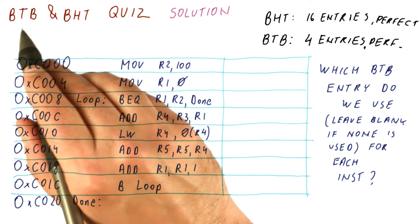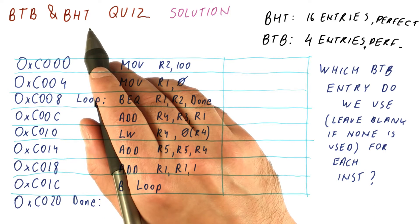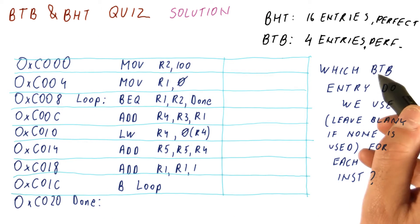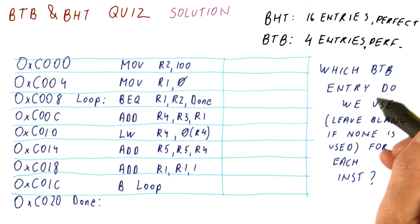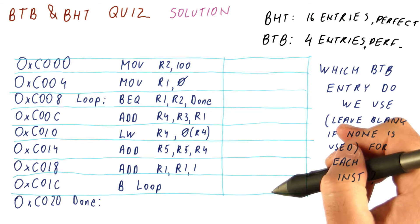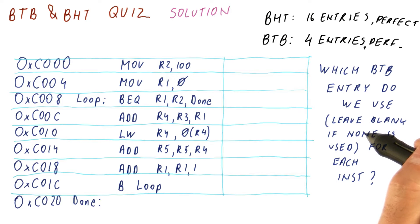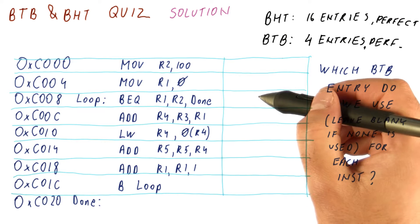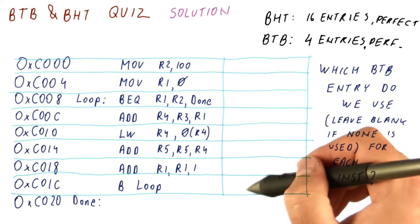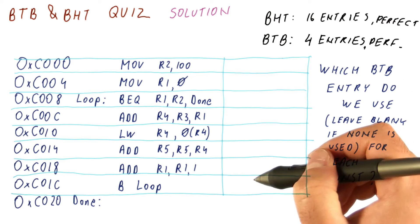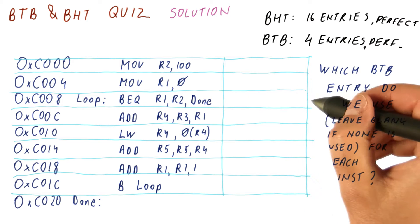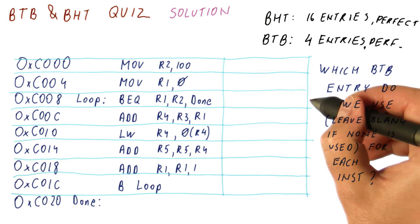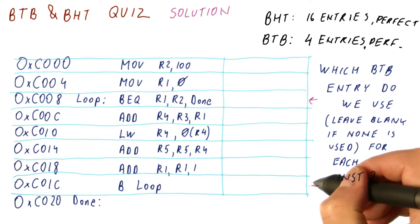Let's look at the solution to this part of our BTB and BHT quiz. The question is which of the four BTB entries do we use for each of these instructions — leave the field blank if none is used. We already know that we use the BTB once here and 100 times here, and those are all of the BTB uses, so the only instructions we need to fill in are these two.